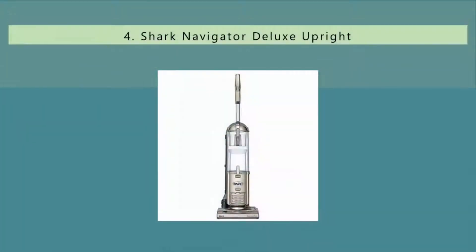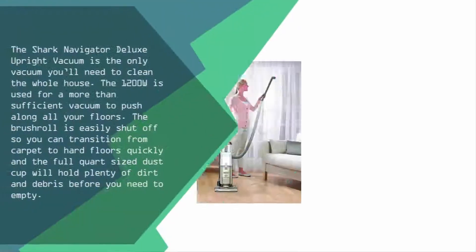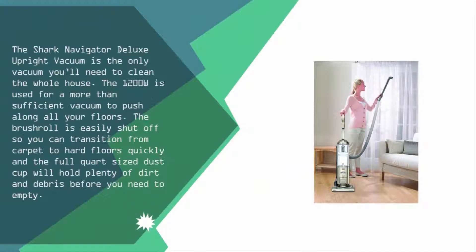At number four, the Shark Navigator Deluxe upright vacuum is the only vacuum you'll need to clean the whole house. The 1200 watt motor provides more than sufficient suction to push along all your floors. The brush roll is easily shut off so you can transition from carpet to hard floors quickly, and the full quart sized dust cup will hold plenty of dirt and debris before you need to empty.